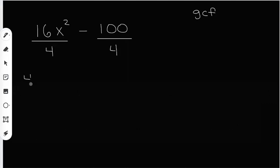So when I take out the 4, what am I going to be left with? 16 divided by 4 is 4, and I have to keep the x squared minus 100 divided by 4. That's 25.